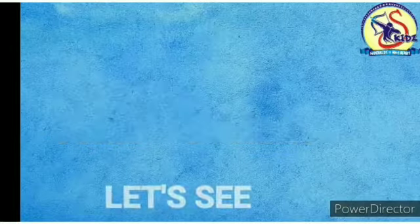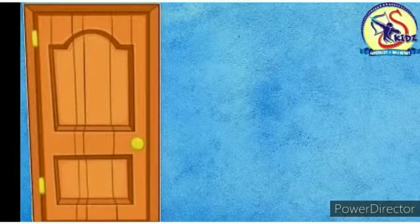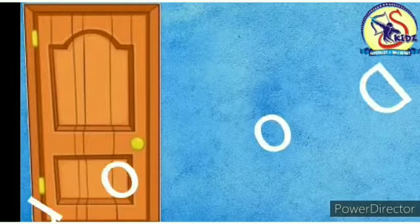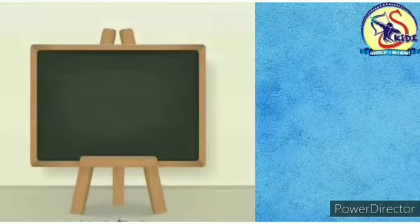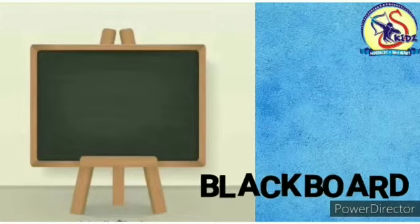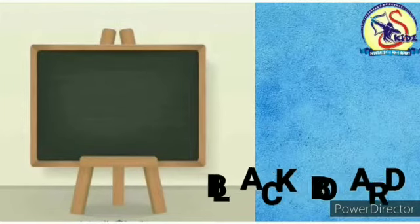Let's see some pictures first. Which picture is this? This is a door. The shape of door is rectangle. Which picture is this? This is a blackboard. Blackboard is in rectangle shape.